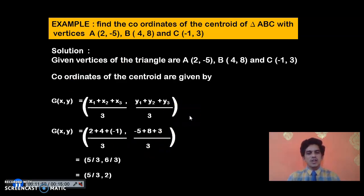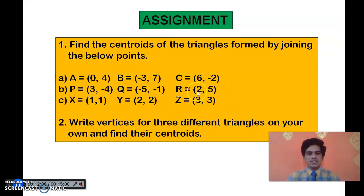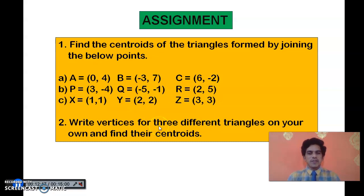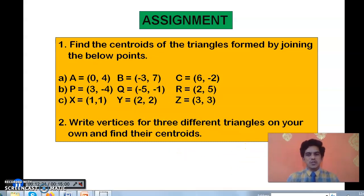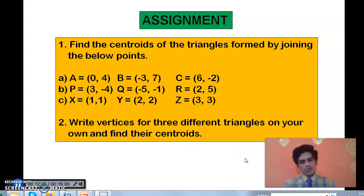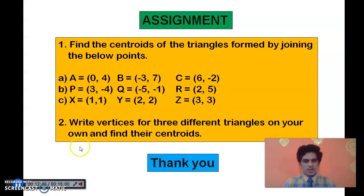This is how you find the centroid coordinates — it's one of the simplest formulas in this chapter. Now here is the assignment for you: I have given 3 triangles — find the centroids and post them to me. Also, write any 3 vertices for a triangle of your own and find their centroid. Do this for 3 triangles with your own coordinates. Practice this formula and solve the problems I've given. Thank you.